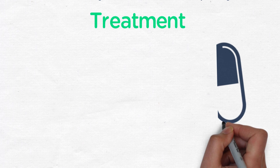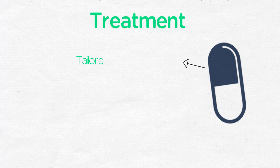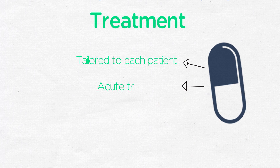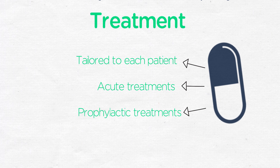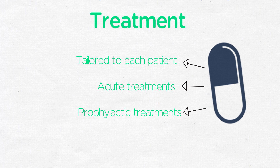Treatment of the primary headache disorders is really tailored to each patient. There are acute treatments, which focus on pain relief and alleviation of the associated symptoms. There are also prophylactic treatments, which are meant to be taken often on a daily basis, and which decrease the intensity and frequency of attacks.